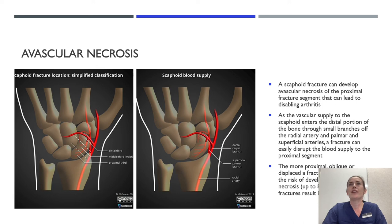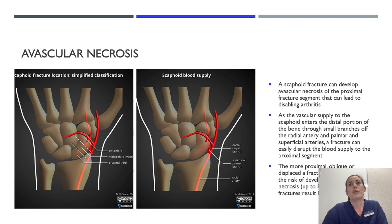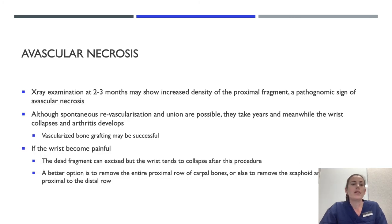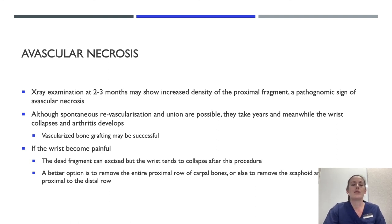With avascular necrosis: a scaphoid fracture can develop avascular necrosis of the proximal fracture segment, leading to disabling arthritis. As the vascular supply to the scaphoid enters the distal portion of the bone through small branches of the radial artery and palmar superficial arteries, a fracture can easily disrupt blood supply to the proximal segment. The more proximal, oblique, or displaced the fracture, the greater the risk of avascular necrosis — up to 80% of proximal fractures result in necrosis. X-ray at two to three months may show increased density of the proximal fragment, a pathognomonic sign for avascular necrosis. Although spontaneous revascularisation and union are possible, they take years, and meanwhile the bone collapses and arthritis develops. Vascularised bone grafting may be successful, but if the wrist becomes painful the dead fragment can be excised, though the wrist tends to collapse after this. A better option is to remove the entire proximal row of carpal bones, or to remove the scaphoid and fuse the proximal to the distal row.